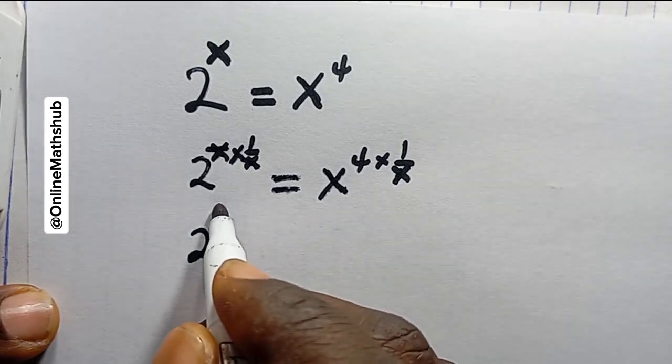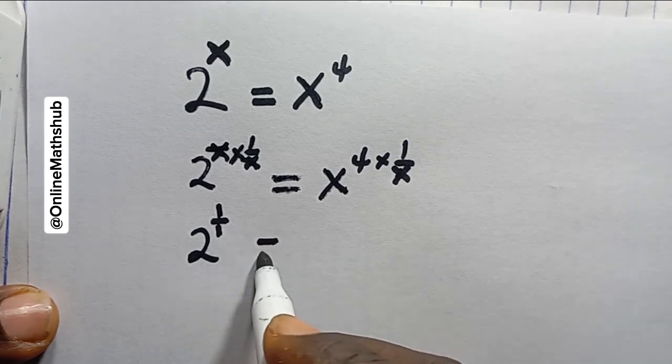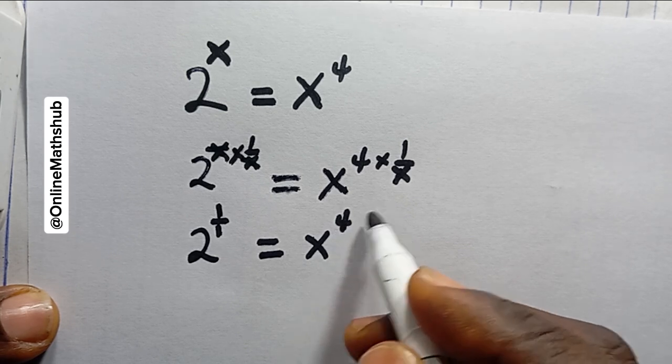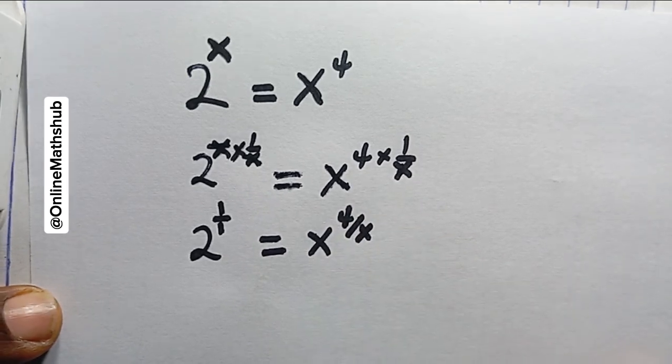Then it's equal to x power 4 divided by x. What I'm just going to do next is also raise both sides to power 1 over 4 so that I can remove this 4 right here.